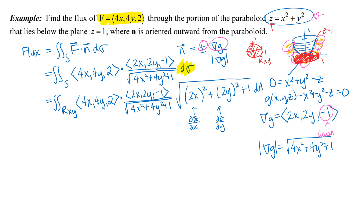Those del Z / del X and del Z / del Y values came from the equation of my surface. Also important: if I had any Z's in my vector field equation or unit normal vector, I would need to substitute in the equation of my paraboloid for Z, since I'm integrating in the XY plane with respect to X and Y.